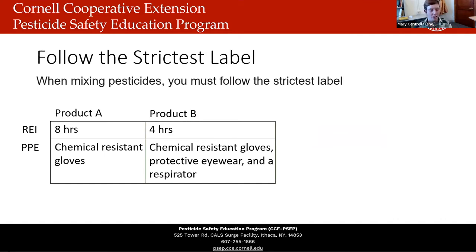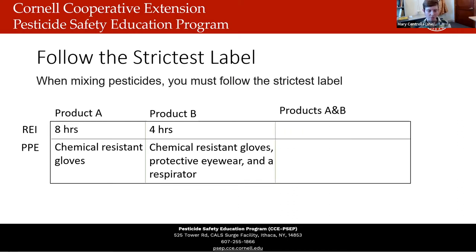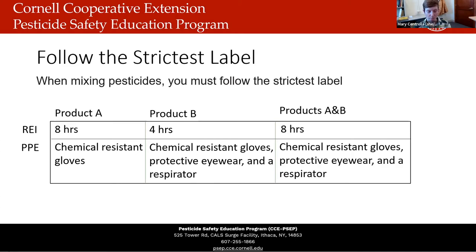When you're mixing pesticides together, you have to follow the strictest label. For example, if product A requires an REI of eight hours and product B requires four hours, you follow the eight-hour REI. If product A requires chemical-resistant gloves and product B requires gloves plus protective eyewear and a respirator, you use all of that PPE. When you mix things together, the hazards posed by each pesticide are still present — the respiratory concern doesn't go away — so that's why you follow the strictest label.